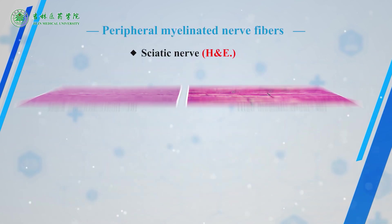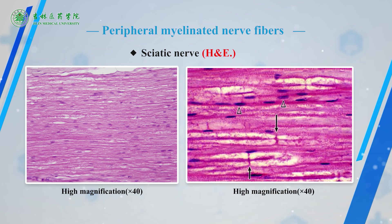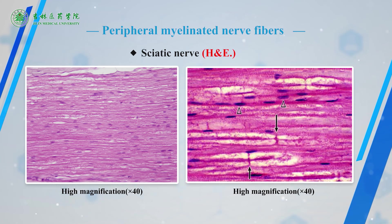The fourth slide is peripheral myelinated nerve fibers. The left micrograph shows the longitudinal section of sciatic nerve. Nerve fibers are arranged parallelly and densely. The central violet strip-like structures are axons, between which thin pink Schwann cell sheets can be seen. Select a regular nerve fiber with a node of Ranvier to observe at high magnification. A purple thread located in the center of the nerve is an axon, indicated by the yellow arrow, which is most clear at the node of Ranvier.